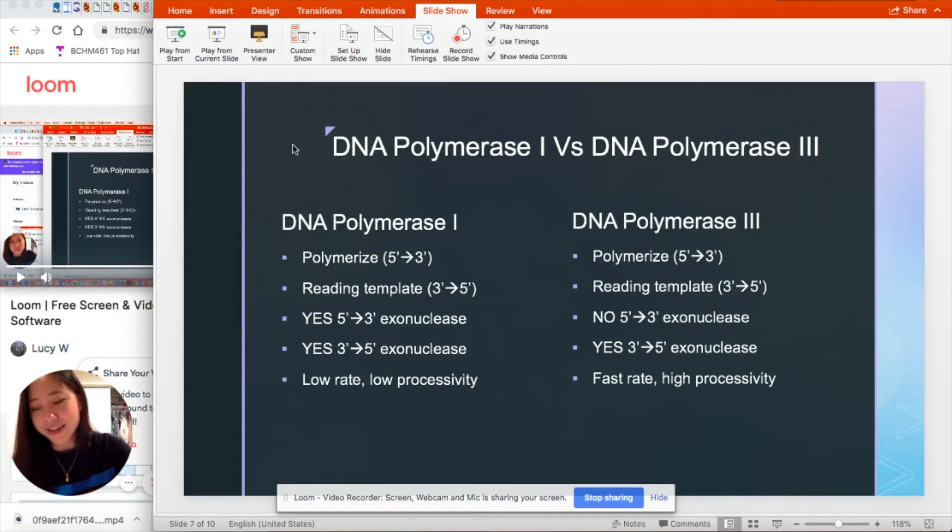What five prime to three prime exonuclease activity means is that polymerase can remove RNA primers, and it can replace it with DNA to form Okazaki fragments, which then get linked with ligase.